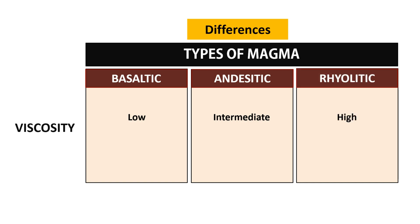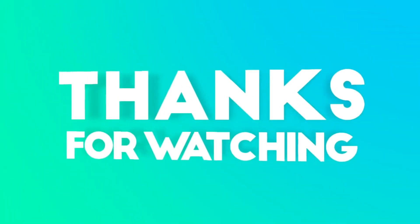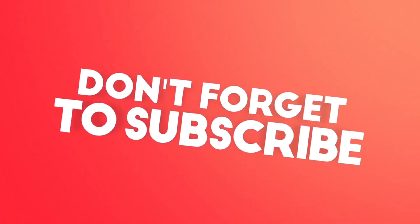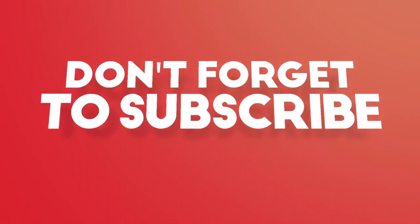The low viscosity of basaltic magma makes it the least explosive. The intermediate viscosity of andesitic magma results in moderate explosiveness, while the high viscosity of rhyolitic magma makes it the most explosive among the three types.